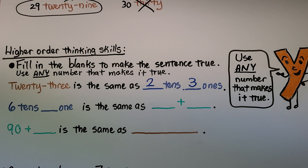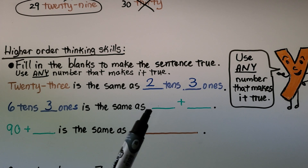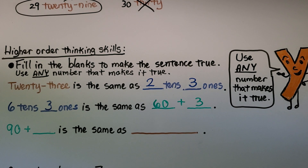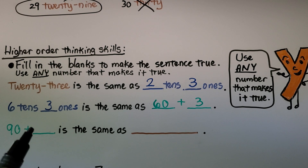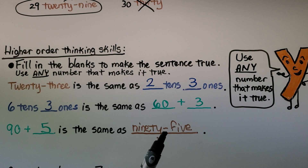Next: six tens and blank ones is the same as blank plus blank. We could use any number — a zero, one, two, three, or more. I'll choose three: six tens and three ones is the same as 60 plus 3. Then: 90 plus some number is the same as a word form number. I'll put a five: 90 plus 5 is the same as ninety-five, written with a hyphen.